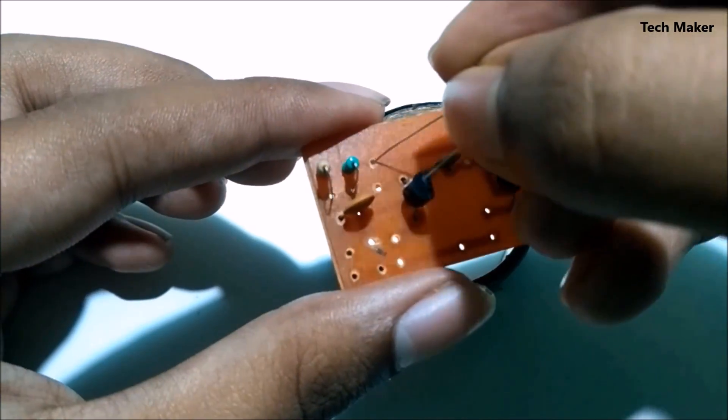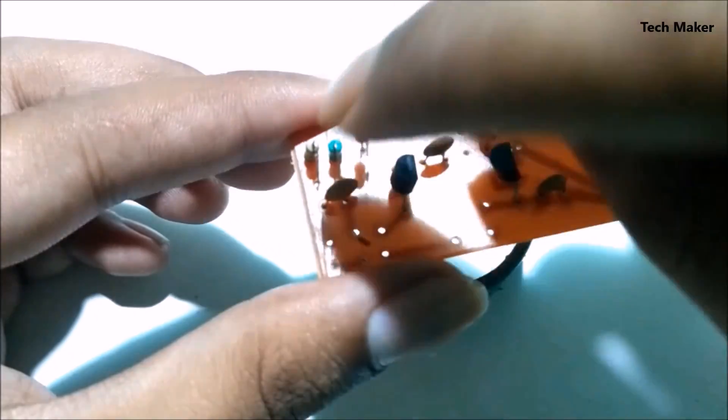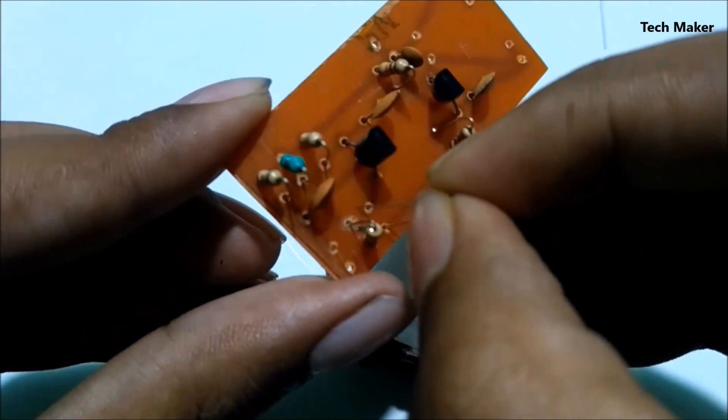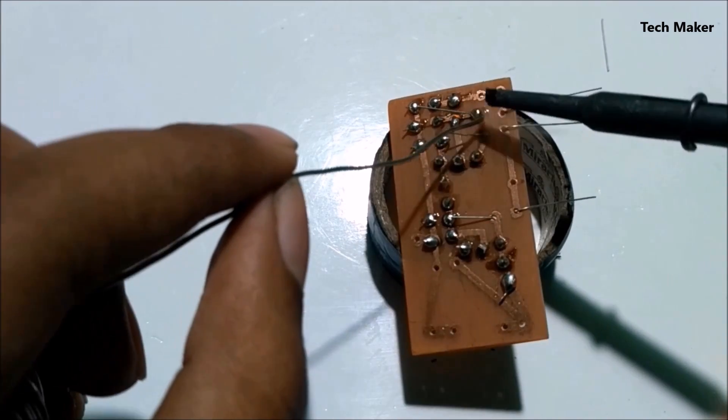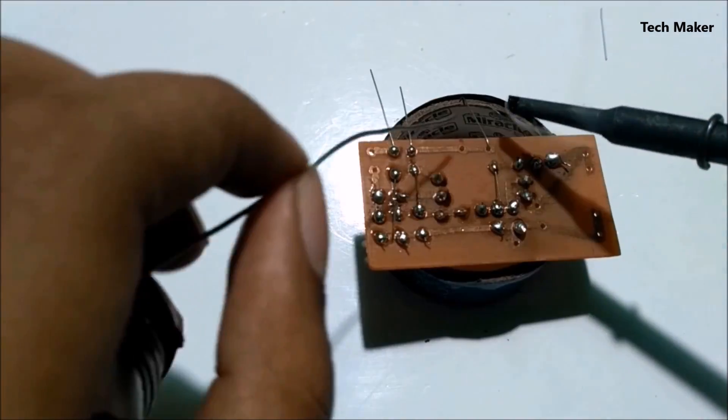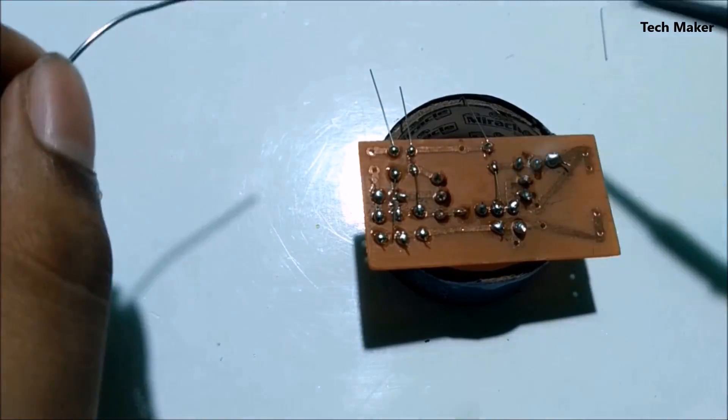Now solder all the resistors and components and remove the unwanted extensions of components.